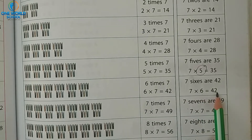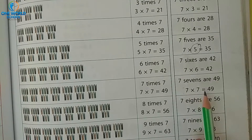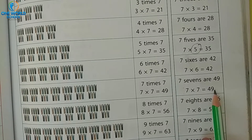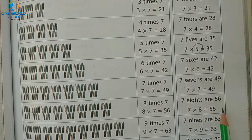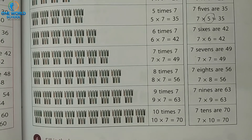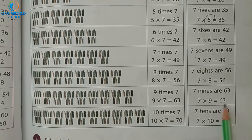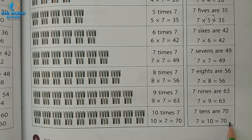7 sixes are 42. 7 sevens are 49. 7 eights are 56. 7 nines are 63. 7 tens are 70.